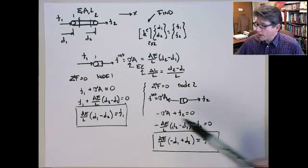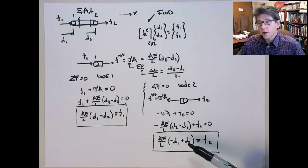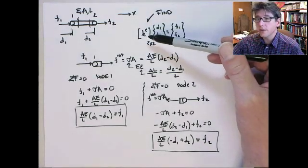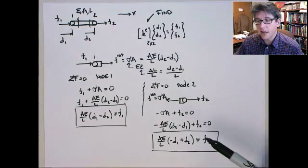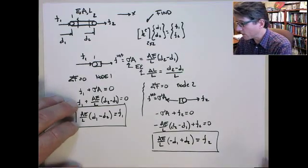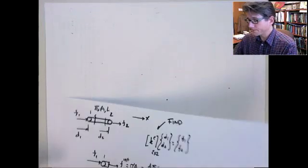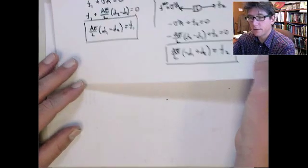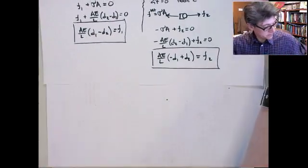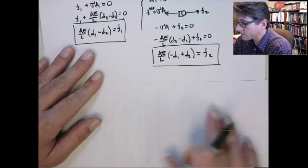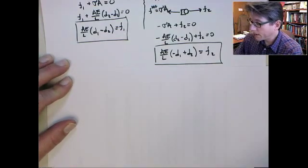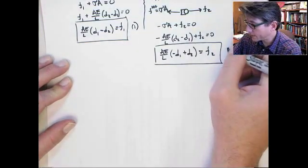So we have two equations and two nodal unknowns, right? The two nodal unknowns are D1 and D2. So the two equations, each equation is going to constitute a row in the stiffness matrix. And we already have this kind of this KD equals F form. So let me just show that, and we're almost done. I'm going to move this up here for now.